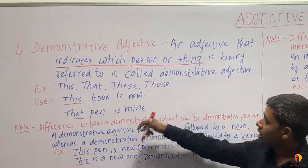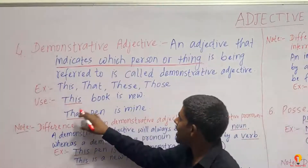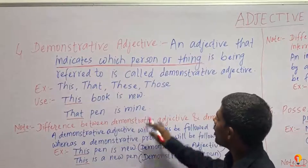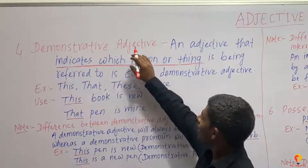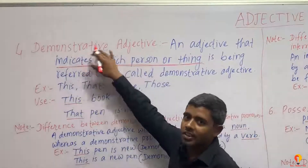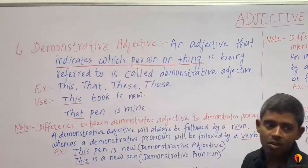So here — this, that, these, those — these all are adjectives called Demonstrative Adjectives.